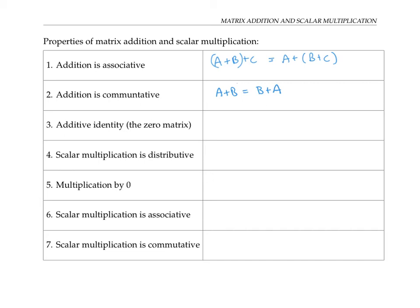What about the additive identity? Is there a zero matrix that you can add to any other matrix and just get the same matrix back? The zero matrix — I'll write zero with little brackets around it to emphasize it's a matrix, not the scalar zero — would have all entries zero. Because when you add zero to every single element of a matrix, you just get the same matrix again. Note that there's actually a lot of different zero matrices — one for every possible pair of dimensions m by n. Just like for regular numbers, scalar multiplication over matrices is distributive: K times (A + B) equals KA plus KB.